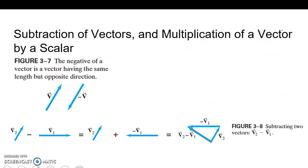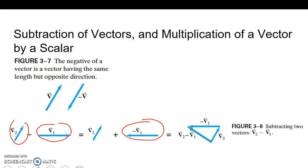Now let's talk about subtraction of vectors. Say we have v1 and v2 and we want to subtract. Remember, positive and negative are just direction — we change the direction of the vector we're subtracting. When we add it tip-to-tail, there's v2, there's v1, and our resultant goes this way. So subtracting just means changing the direction of the one that's negative.